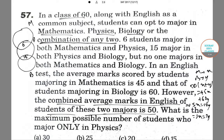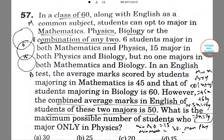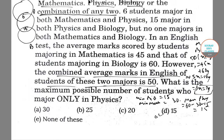The question asks for the maximum possible number of students who major only in Physics. From the equation X equals 2Y, the number of students in Maths is twice the number majoring in Biology. Since students majoring in both Physics and Biology is 15, the minimum students in Biology is 15, so minimum students in Maths is 2 into 15 equals 30. Therefore, maximum students in Physics equals 60 minus 30 minus 15 equals 15. The correct option is Option D.